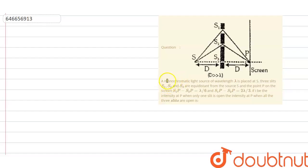So the question says: A monochromatic light source of wavelength lambda is placed at S. This is the point S. Three slits S1, S2, and S3